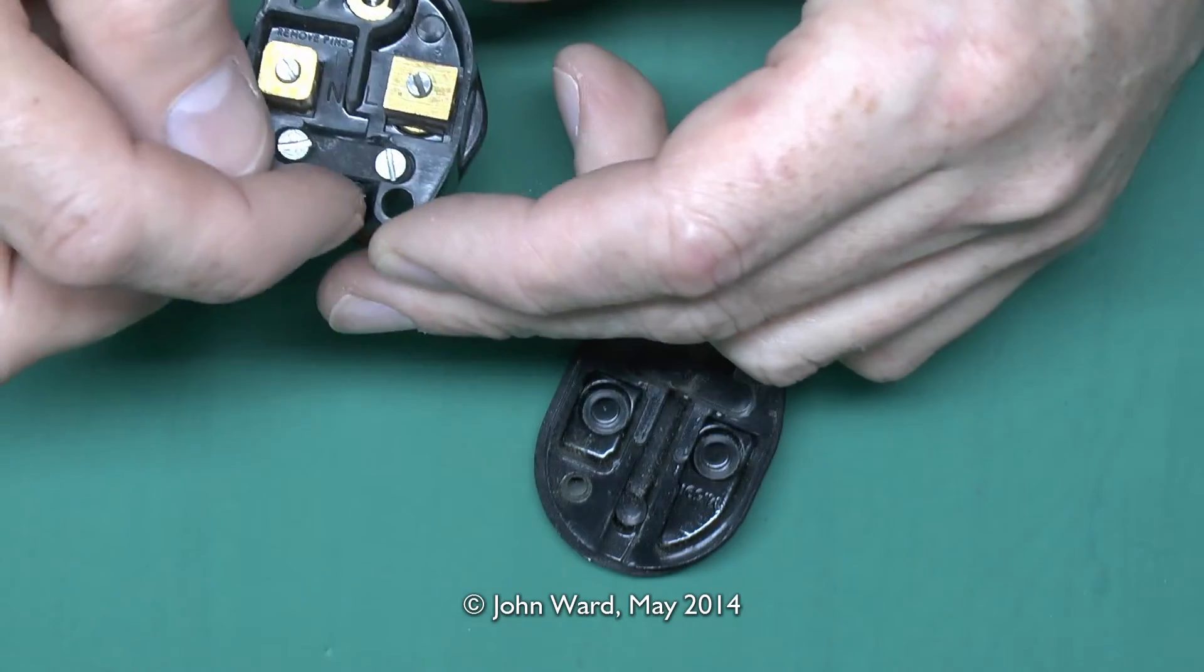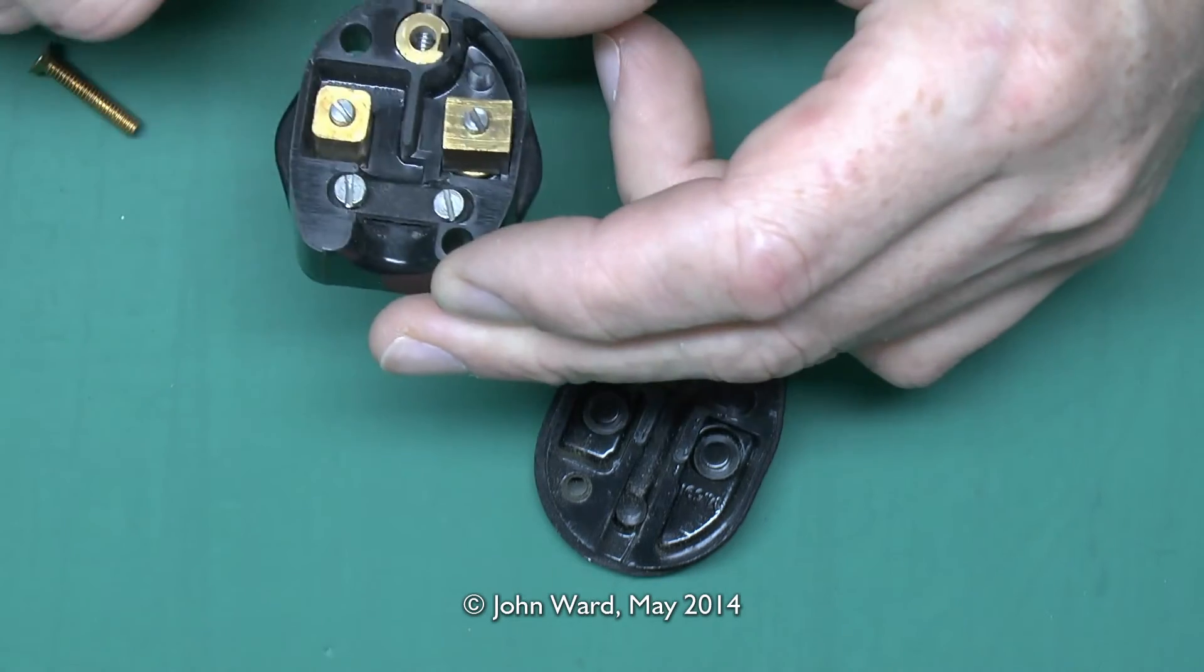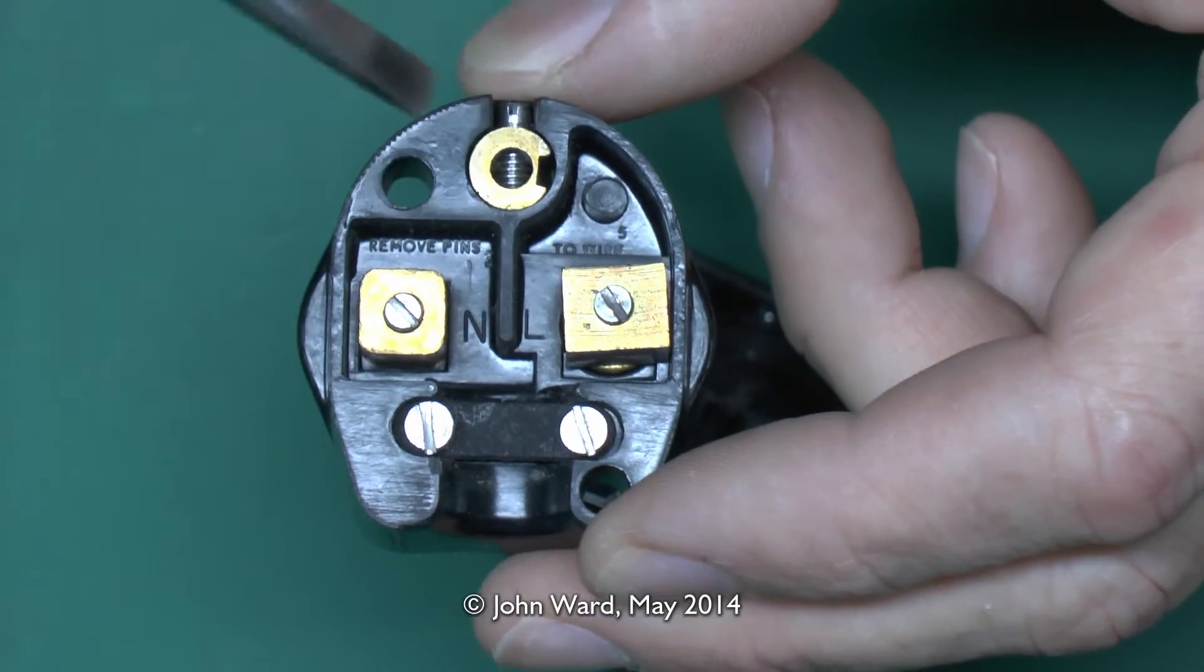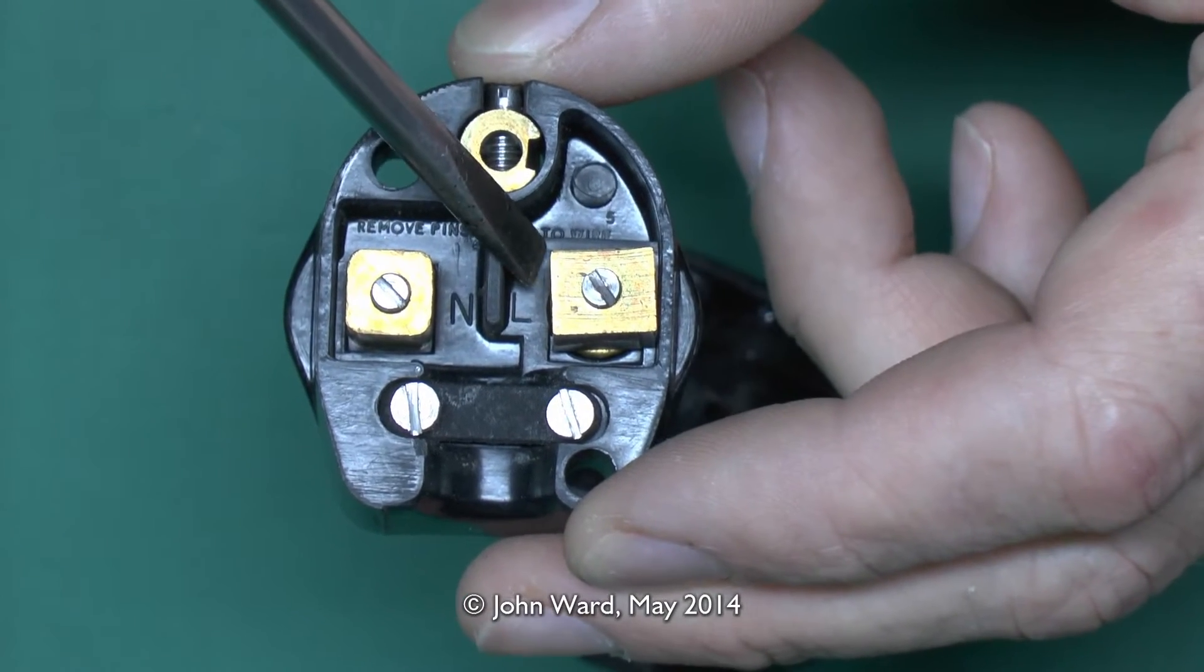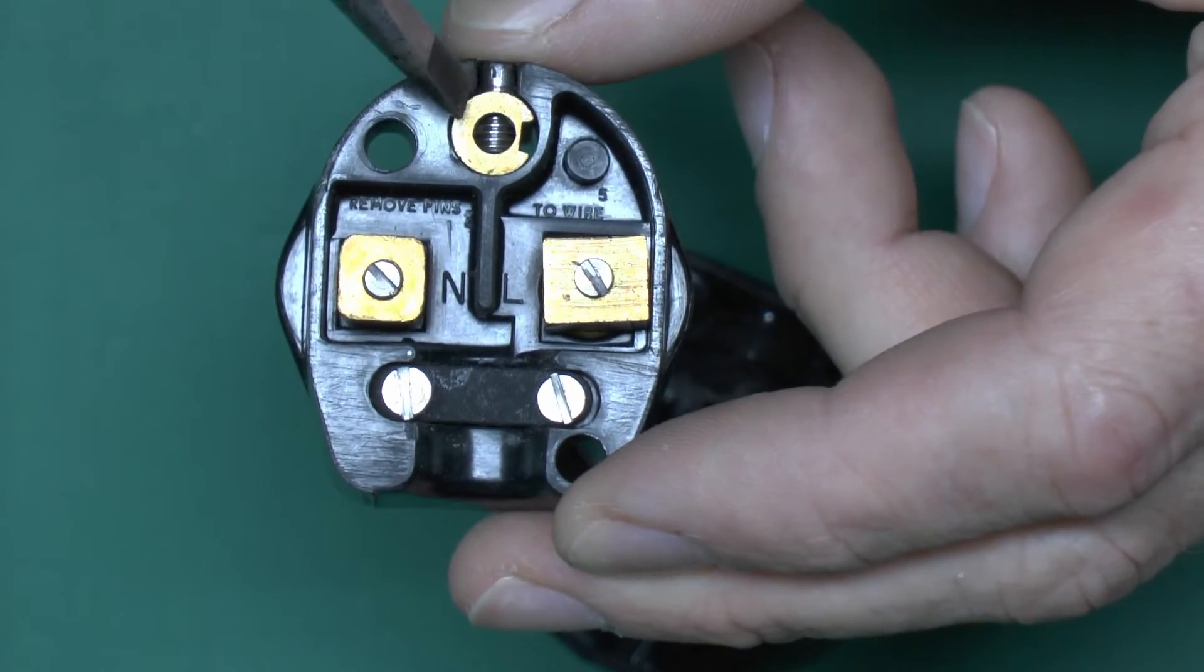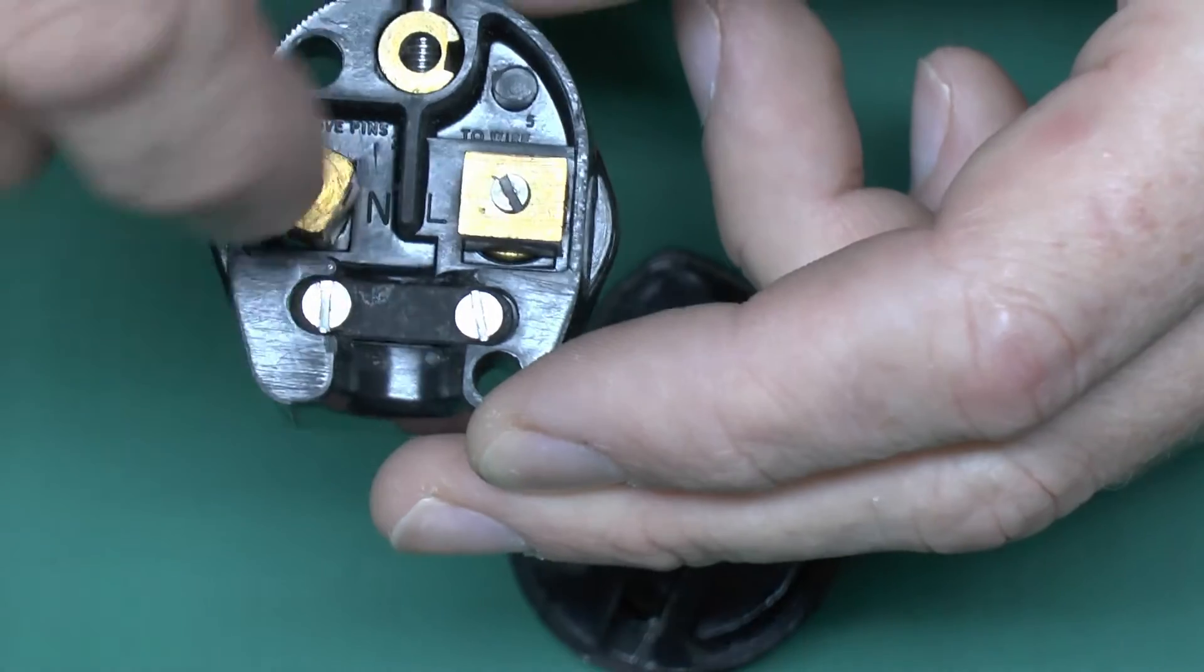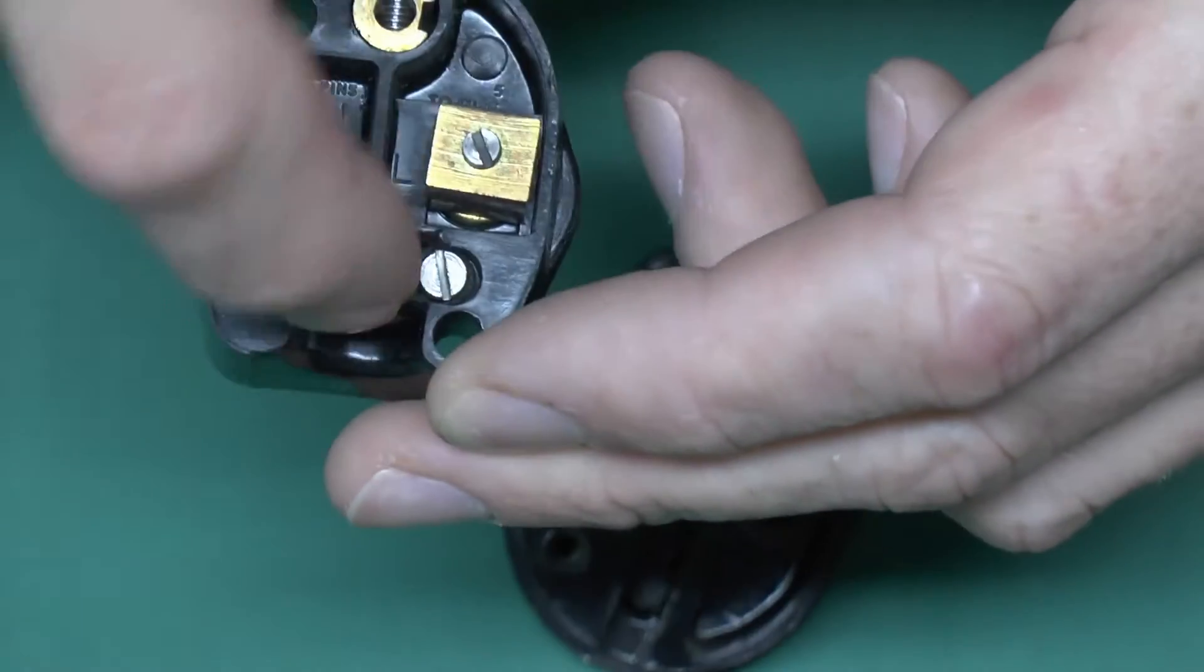Other than that, just the flex will come at the bottom, and a similar sort of bar clamp there just to secure the flex coming in. And if you look inside here, we've got the neutral and line marked with N and L. It has the instructions about removing the pins to wire, which of course will make it much easier. Just take the pin out, put the wire in, and then put the pin back in, clamp the flex underneath.